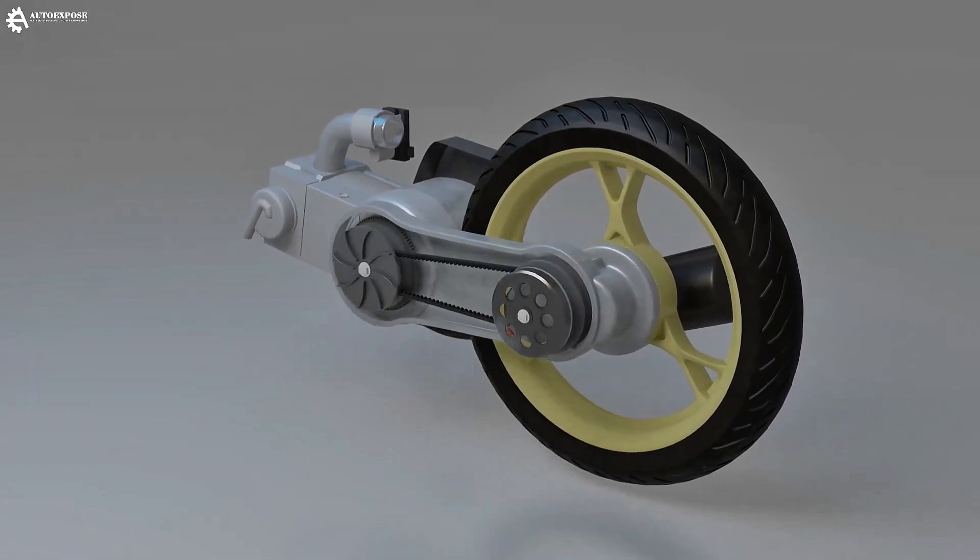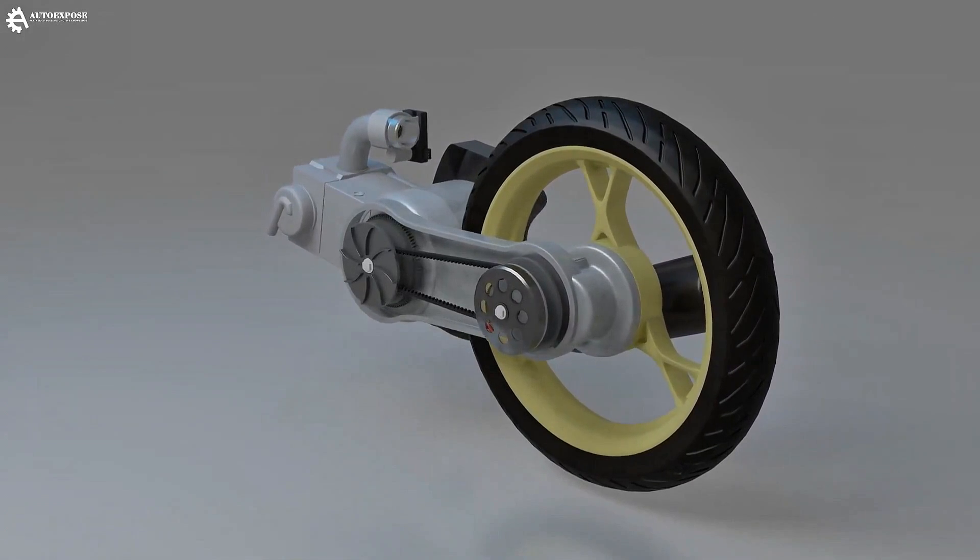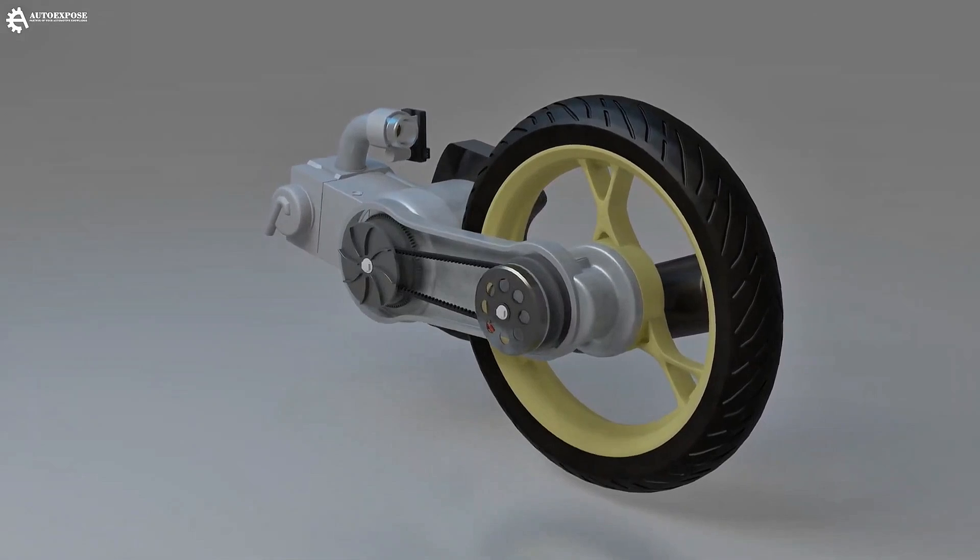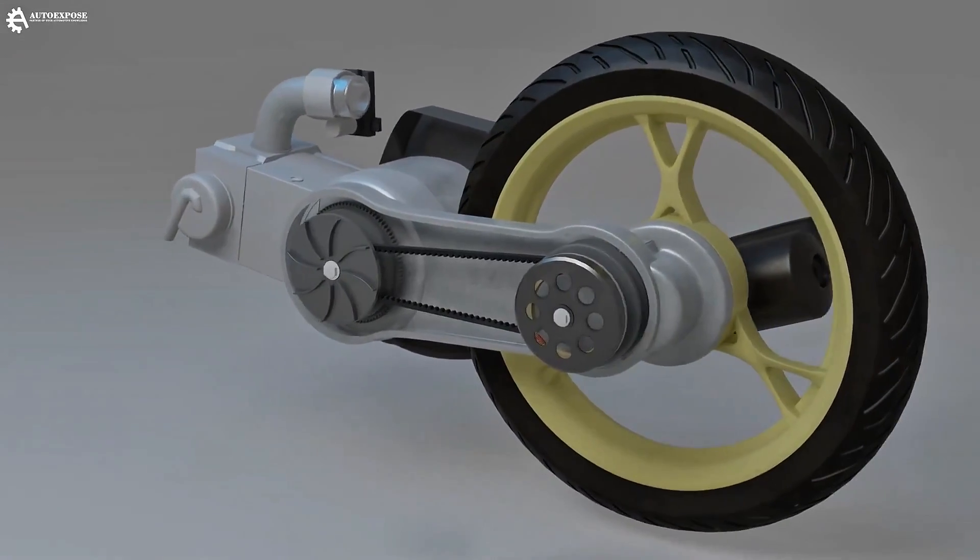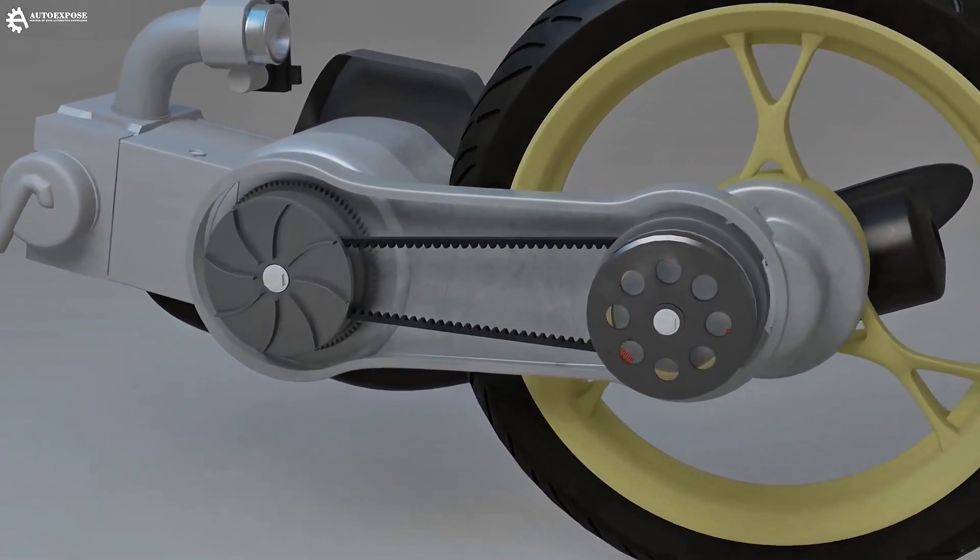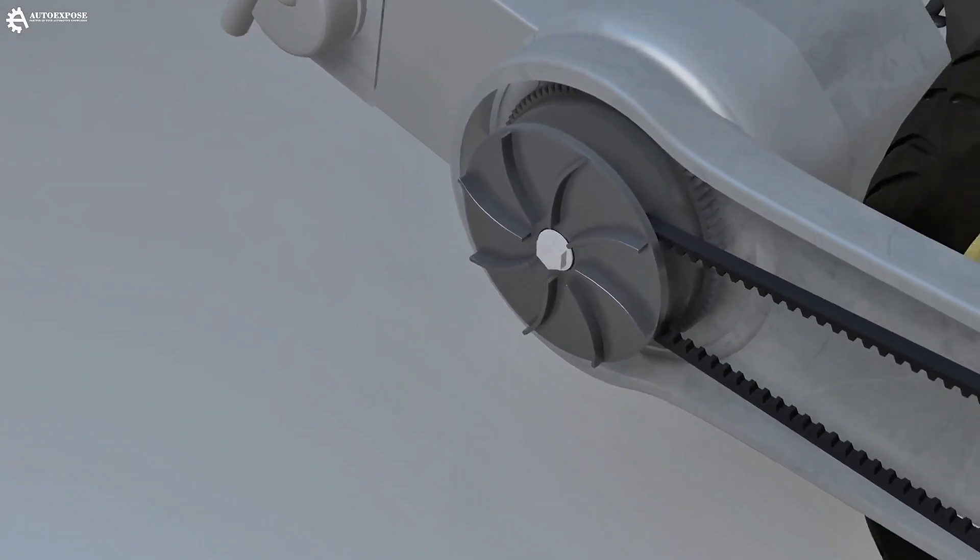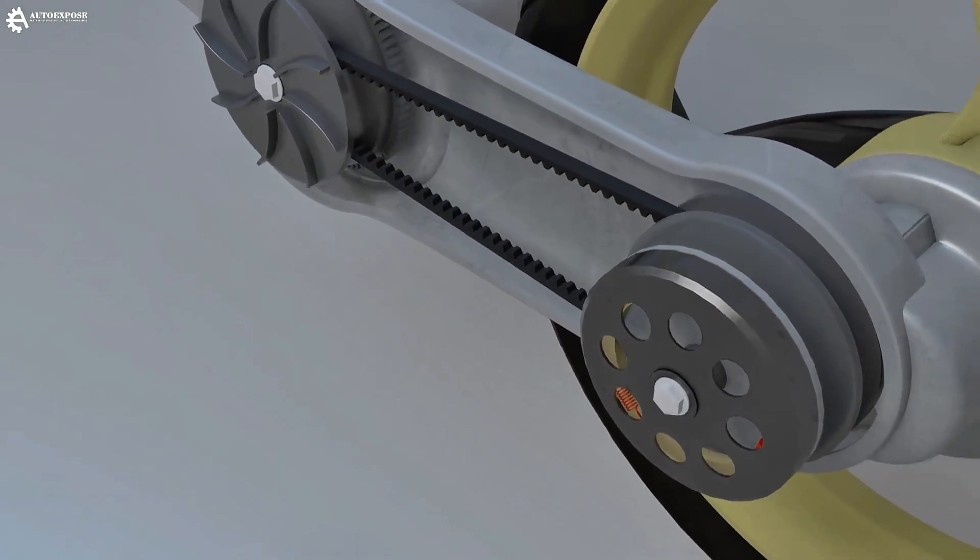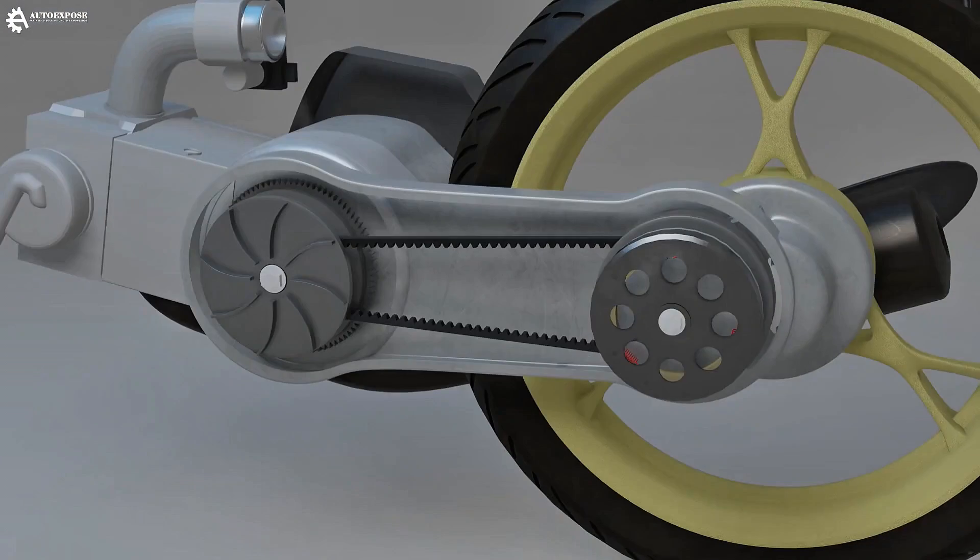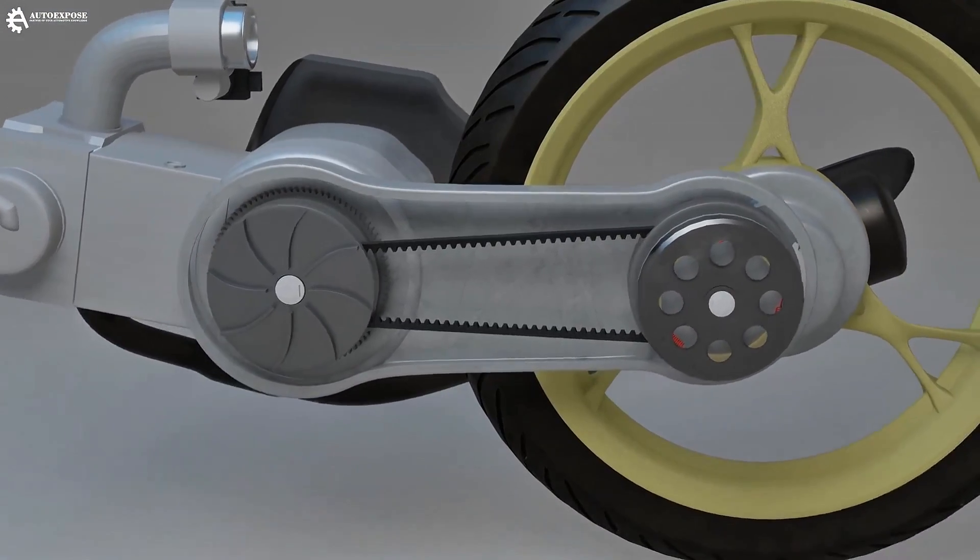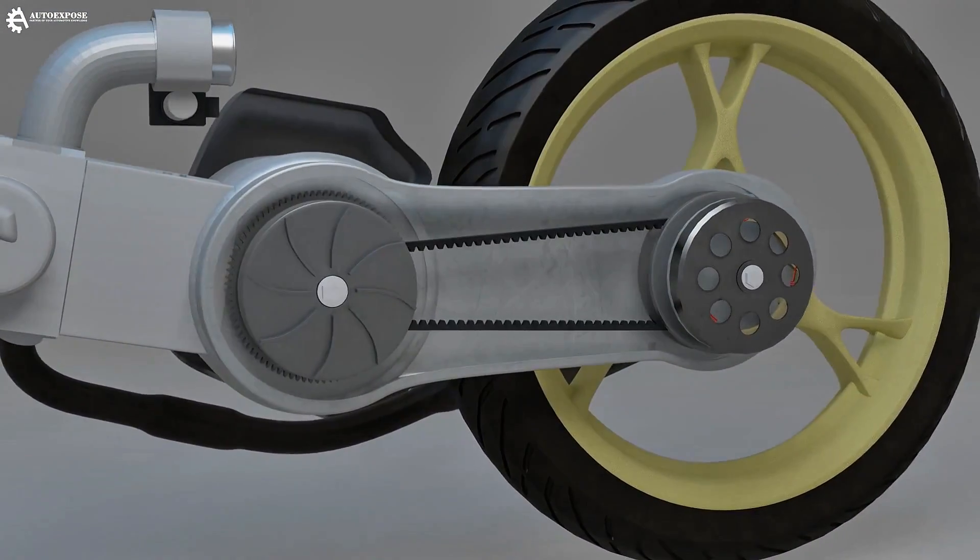So the question is, can something similar happen to an automatic motorcycle? Now, let's dissect the automatic transmission. Actually, an automatic transmission is very simple. As you can see, I based this on the original transmission found on an automatic motorcycle. It's very simple and doesn't involve any gears.